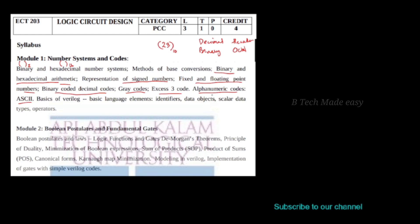Alphanumeric codes combine numbers and alphabets. We call it ASCII — American Standard Code for Information Interchange. We will also cover the basics of Verilog.